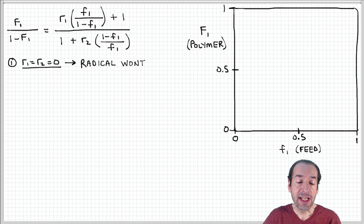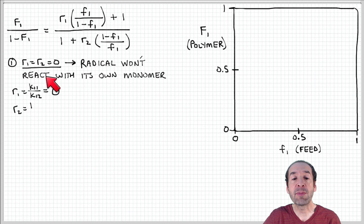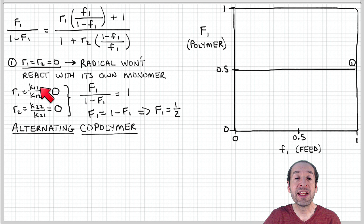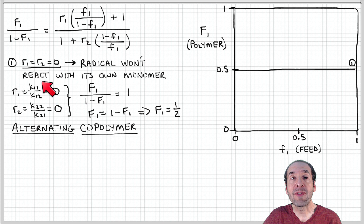The first situation we can think about is if the reactivity ratios are zero. The reactivity ratio expresses the relative rate of addition of the same monomer to a growing chain versus addition of the other monomer. So for an active chain with monomer 1 at the end, it's the relative rate at which another monomer 1 will be added relative to monomer 2 — the preference for adding the same monomer versus the other monomer.